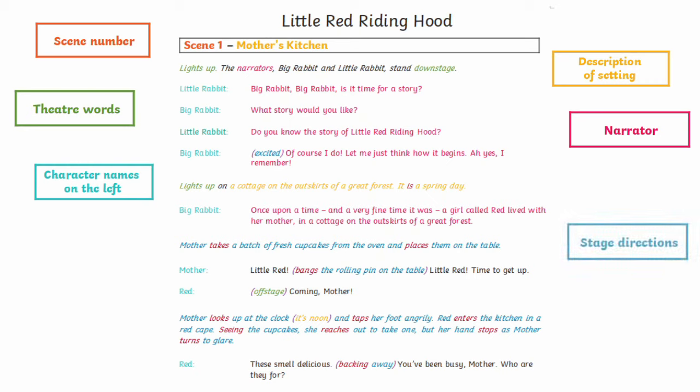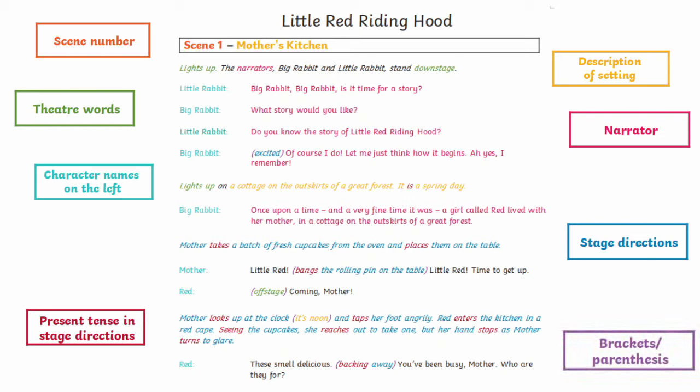Stage directions tell us what's going on on stage. No one reads the stage directions out loud — they're just there to let the performers know what should be happening on stage. These are always in italics, like they are here, and they're written in the present tense as though they are happening right now. If you're adding stage directions into the bits while the characters are talking, these should also be put in brackets so we know it's not part of the dialogue.